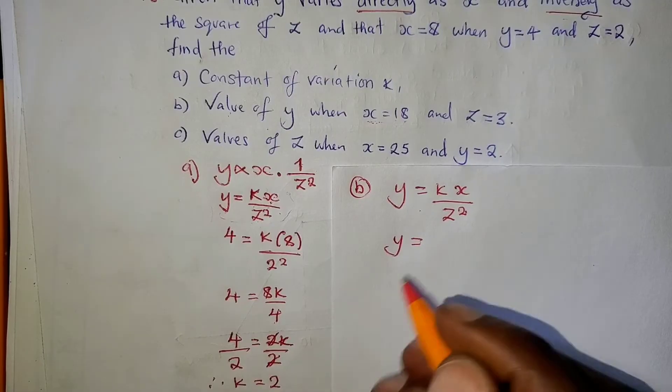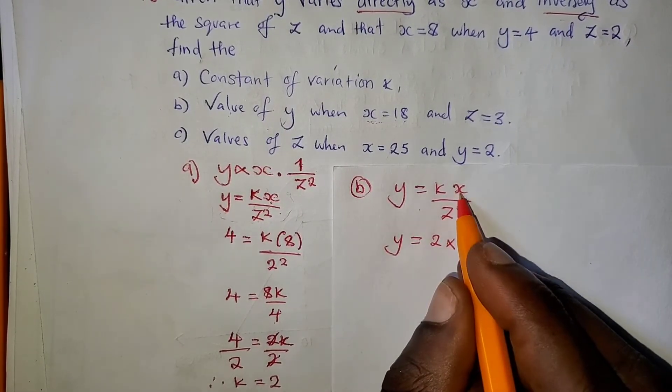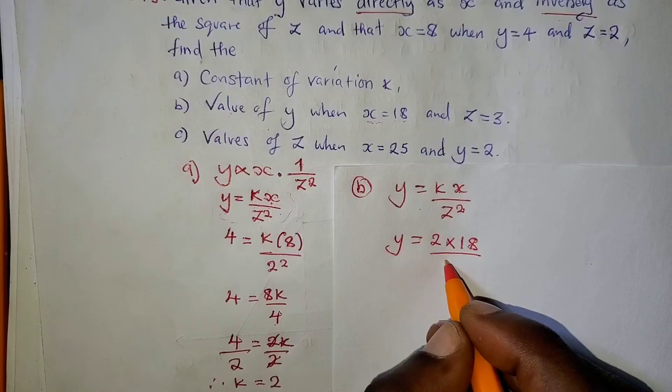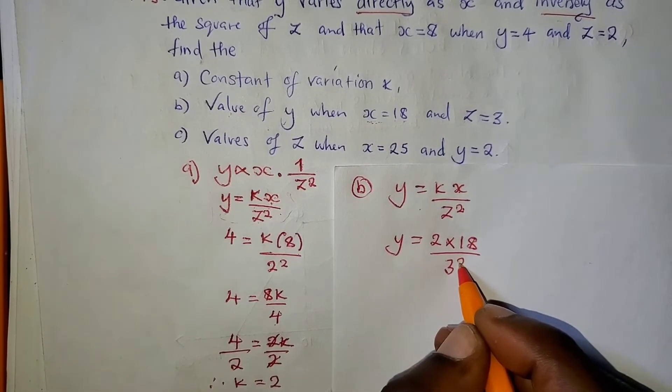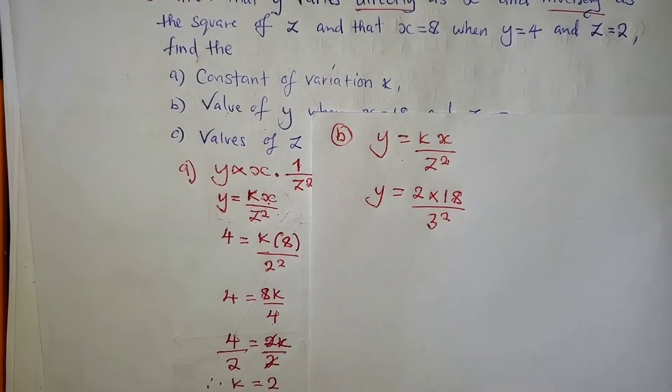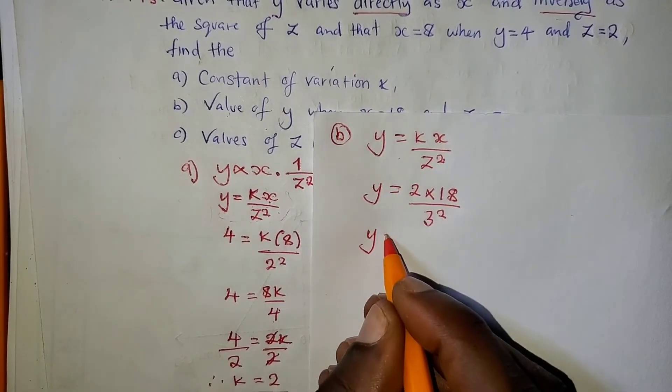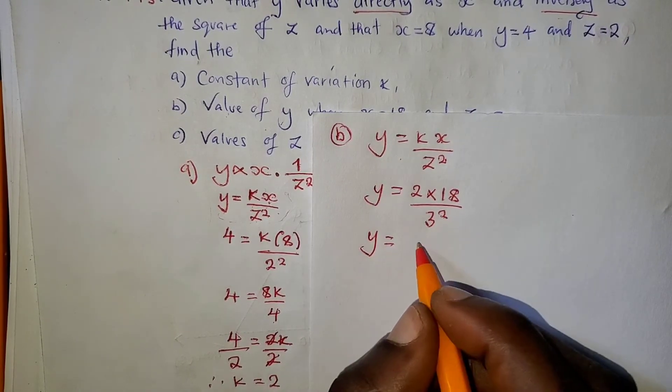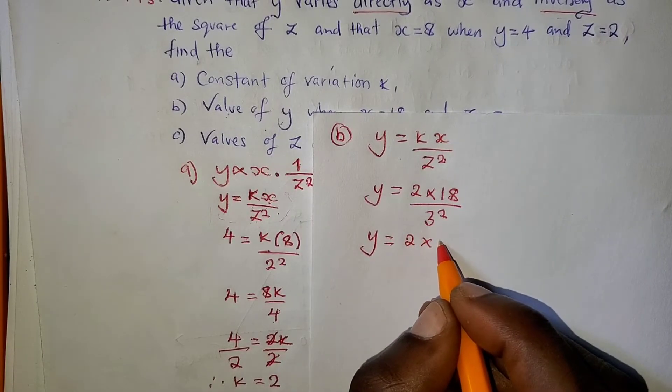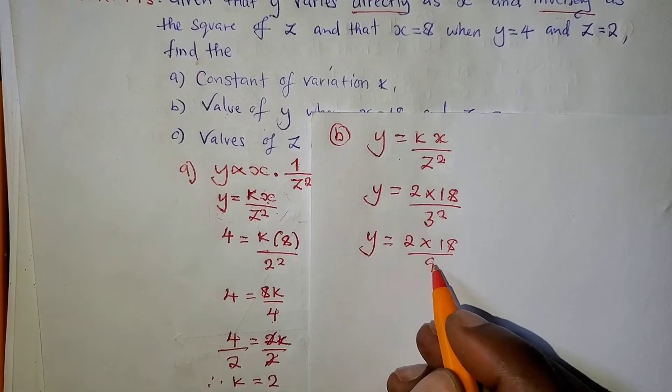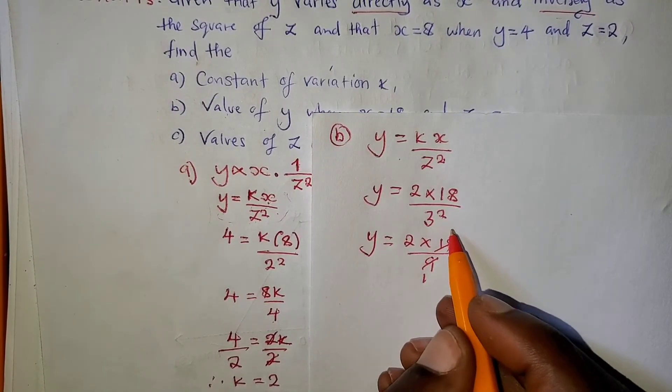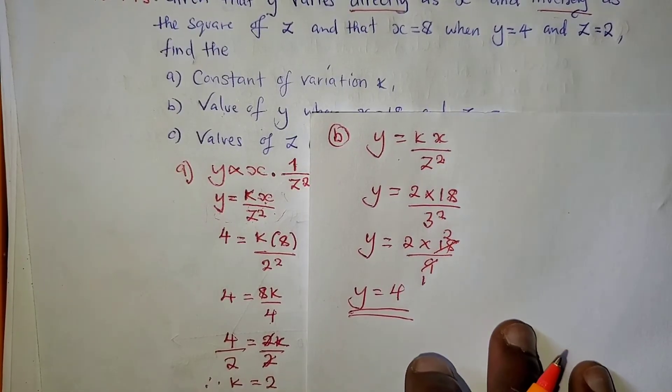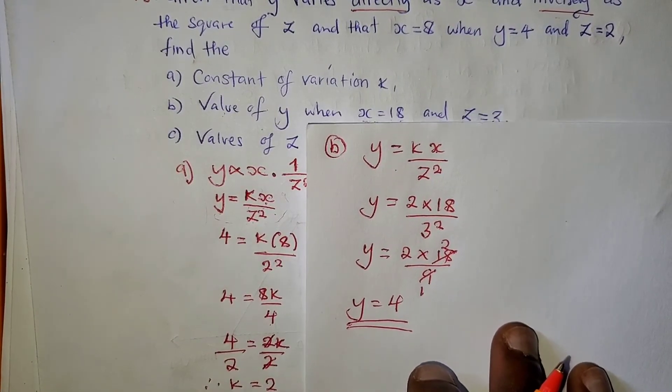K is 2 here, already calculated as 2, so we are going to substitute with 2 times X is 18, divided by Z squared, which will be just 3 squared. Then make it simple. 3 squared is 9, so we can just say 2 times 18 over 9. 9 into 18 is 2 times. The value of Y equals 2 times 2, which is 4. The value of Y is 4.